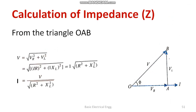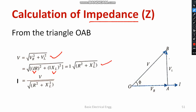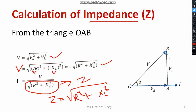From the triangle, the total voltage is given by V = √(VR² + VL²). Substituting VR = IR and VL = IXL, we get V = I√(R² + XL²), so the current I = V / √(R² + XL²). Therefore, the impedance Z = √(R² + XL²). The unit of impedance is ohms. This equation is very important when solving problems.